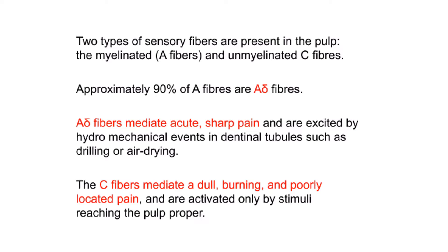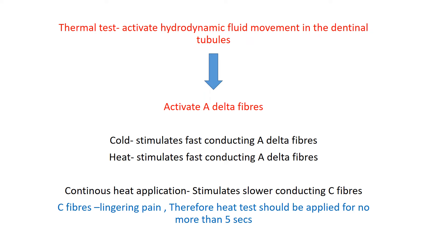There are two types of sensory fibers in the pulp: myelinated A-delta fibers and unmyelinated C fibers. Approximately 90% of fibers in the pulp are A-delta fibers. A-delta fibers detect acute or sharp pain, while C fibers are responsible for detecting dull, boring, poorly localized pain. Remember: A-delta fibers detect acute/sharp pain; C fibers detect dull or poorly located pain.